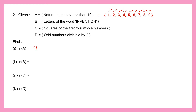Set B: letters of the word 'invention'. Remember, when you write you cannot repeat. So: I, N, V, E — N is already there — T — I is already there — O — and cancel the second N. So the unique letters are I, N, V, E, T and O. Counting them: 1, 2, 3, 4, 5 and 6. So the cardinal number of set B is 6.